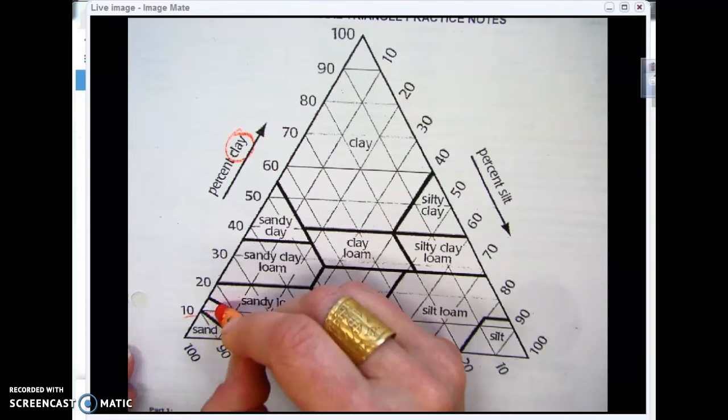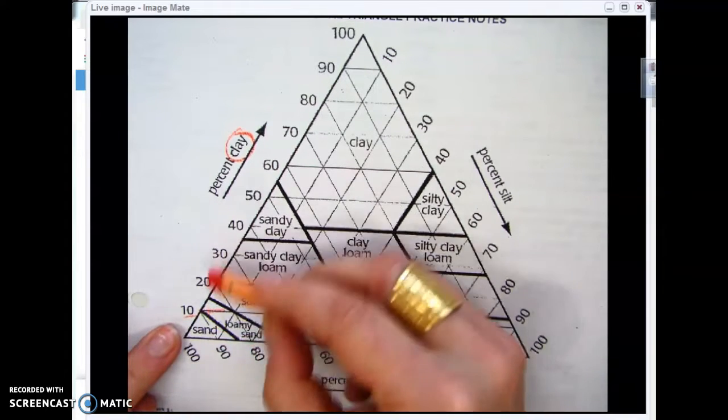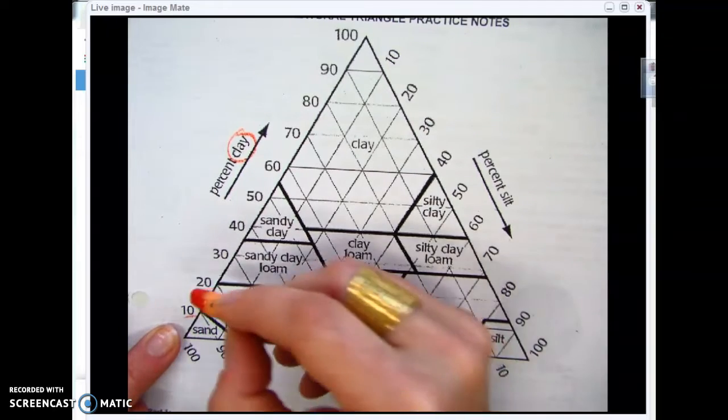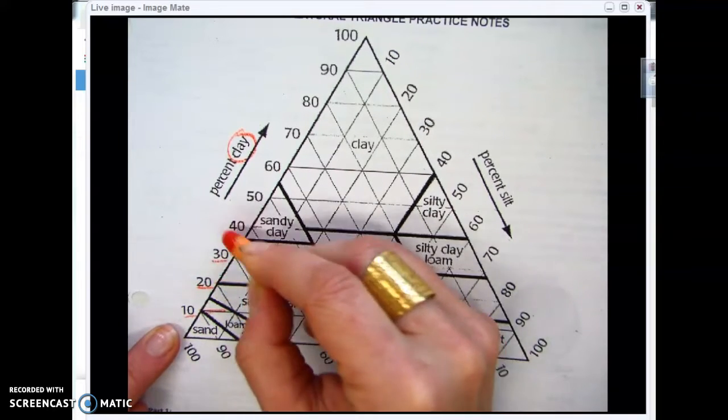This 10 is this line, so all soil samples with 10% clay can be found along that line. Your 20 is on this line, and so forth and so on.